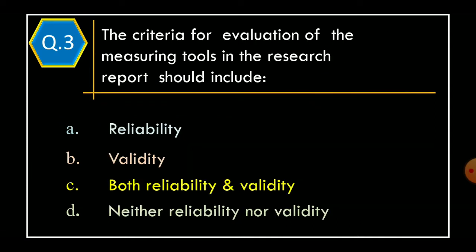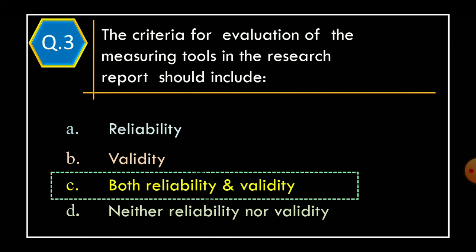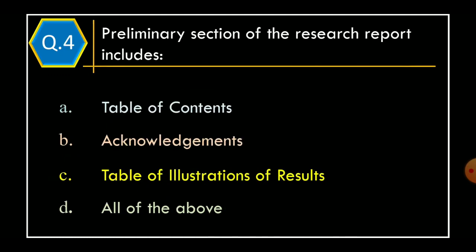Question 3: The criteria for evaluation of the measuring tools in the research report should include — Option A: Reliability. Option B: Validity. Option C: Both Reliability and Validity. Option D: Neither Reliability nor Validity. The correct option is Option C, Both Reliability and Validity.